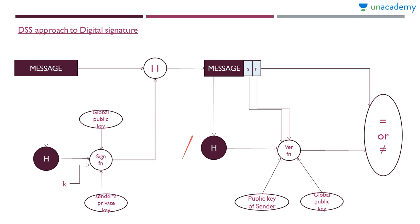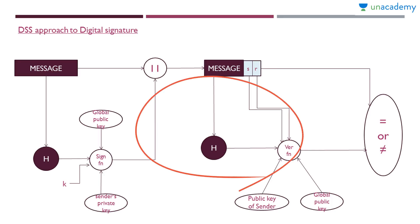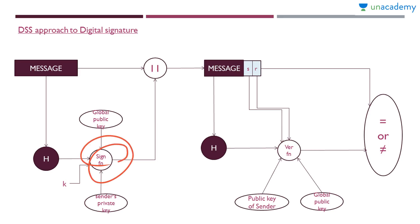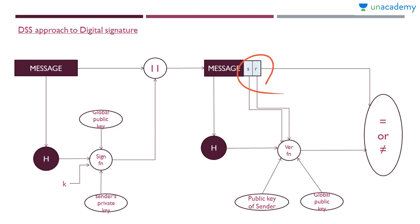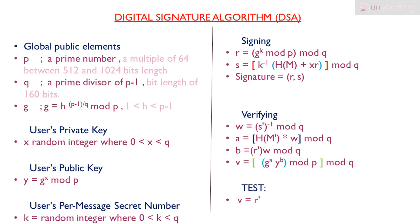There is also ECC — Elliptic Curve Cryptography — which can be used for digital signature, and it is very similar to DSS: it uses a global public key, uses k, and produces a pair of elements. Now let's look at the Digital Signature Algorithm, DSA, in detail.